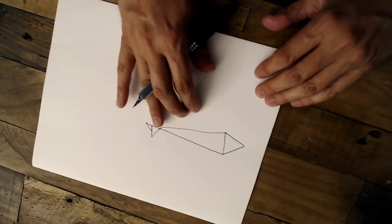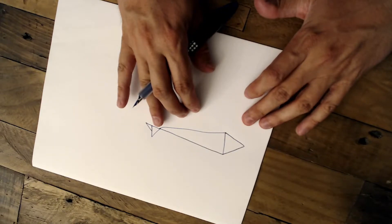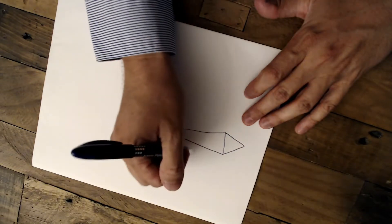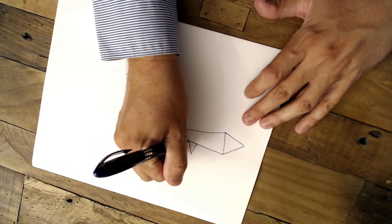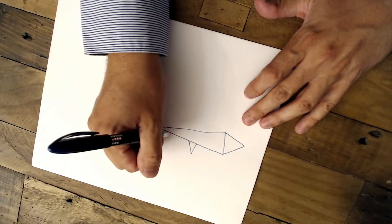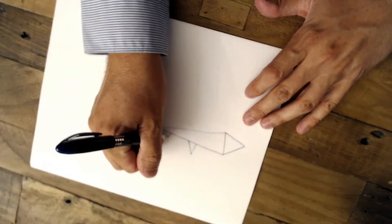Now that we have the body, his head, and his tail, let's create his fin using a triangle, a smaller triangle.